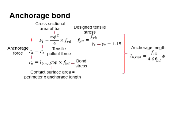It is assumed that the anchorage force will equal the tensile pullout force of the steel bar. The anchorage force is determined by the contact surface area of the steel bar multiplied with the bond stress.